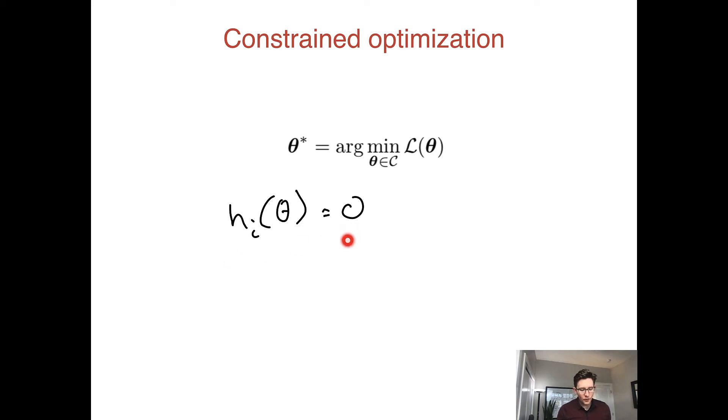Note that this encapsulates many possible types of constraints, because we could put any function here. This could be any function that outputs zero if this value of theta is allowed and some non-zero value otherwise. So really, we can write any constraint in this form.